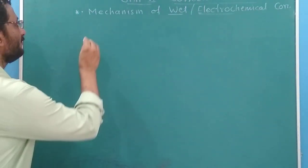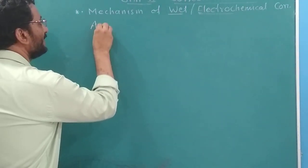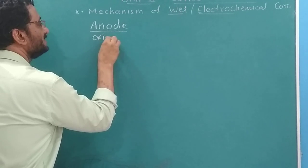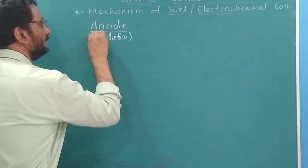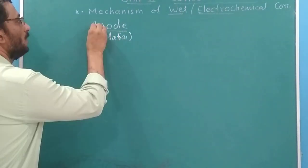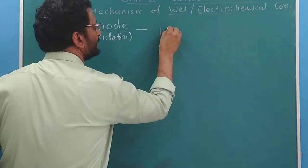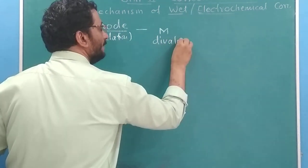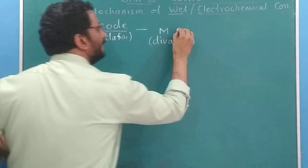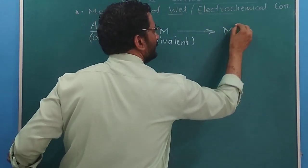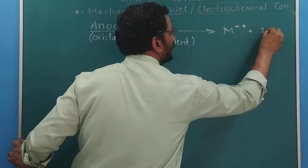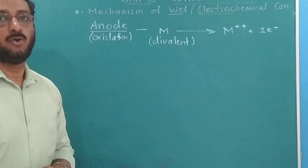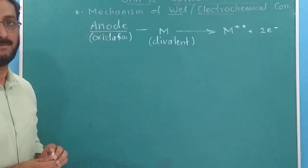Current flows through the conducting solution between the separate anode and cathode parts. The anode part will always undergo oxidation. If this is a divalent metal exposed to the conducting medium, the oxidation reaction produces metal ions M²⁺ with the loss of two electrons. This is the oxidation reaction of the metal at the anode part of the cell.